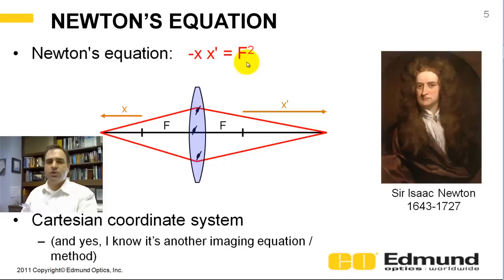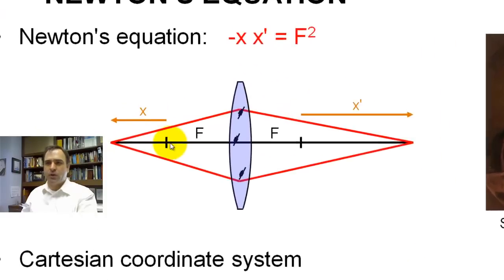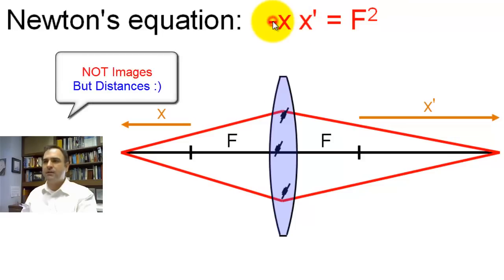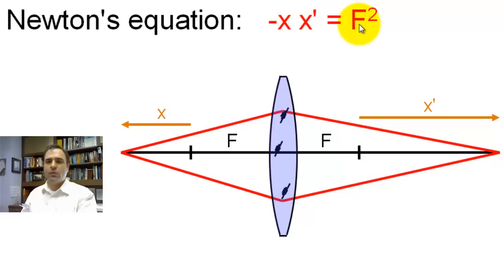His thin lens equation is different than the lens maker's equation, because he references distances from the focal points. So the object distance, x, is referenced from the front focus here. His image distance, x prime, is referenced from the back focus here. This uses a Cartesian coordinate system. So the product of these two images, times a negative sign, equals the focal length squared.